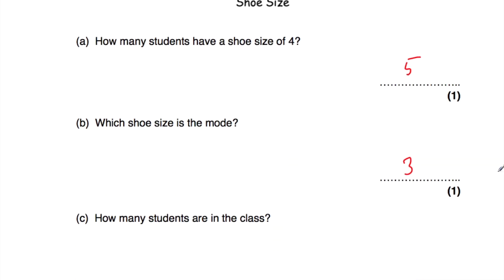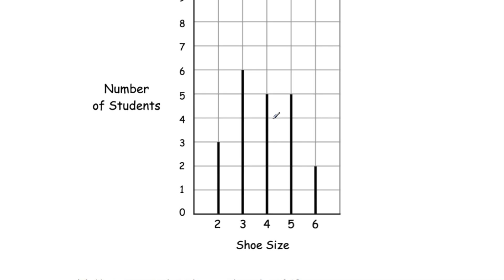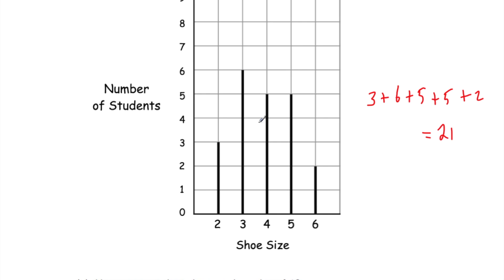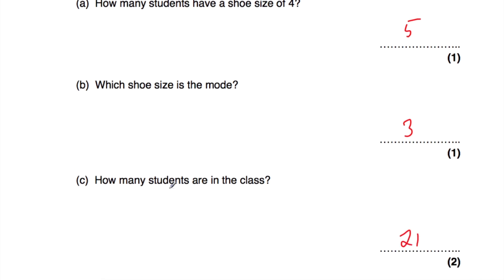Part C says how many students are in her class? It doesn't tell us directly, but she asks all the students, so we add up the frequencies: three plus six plus five plus five plus two. Three plus six is nine, plus five is 14, plus five is 19, plus two is 21. So there are 21 students in the class — found by adding up all the frequencies for each vertical line.